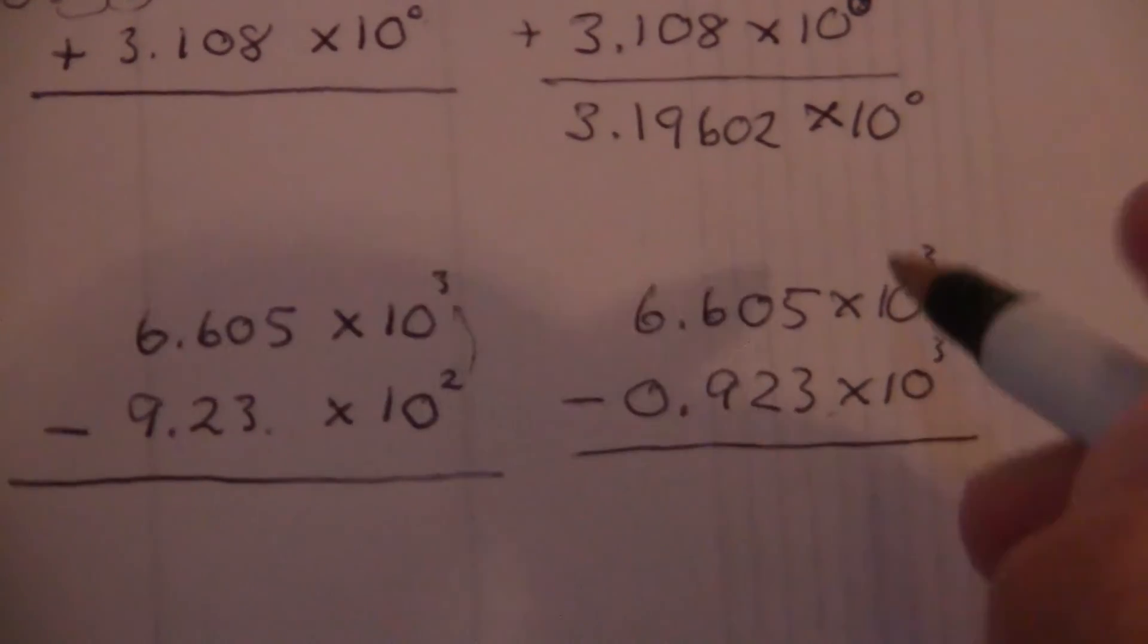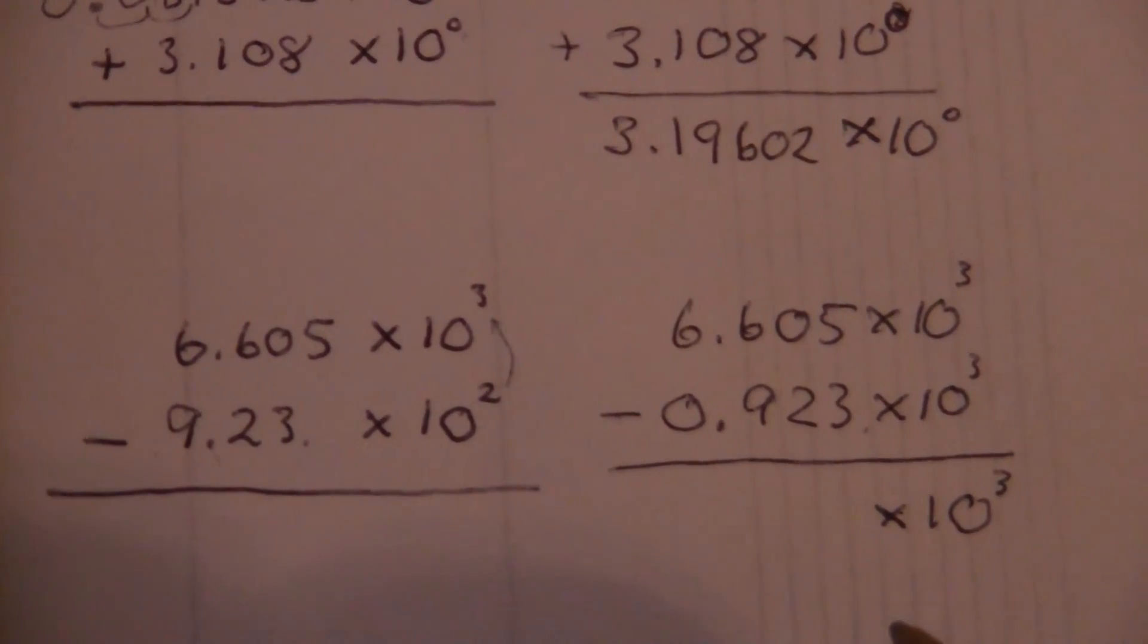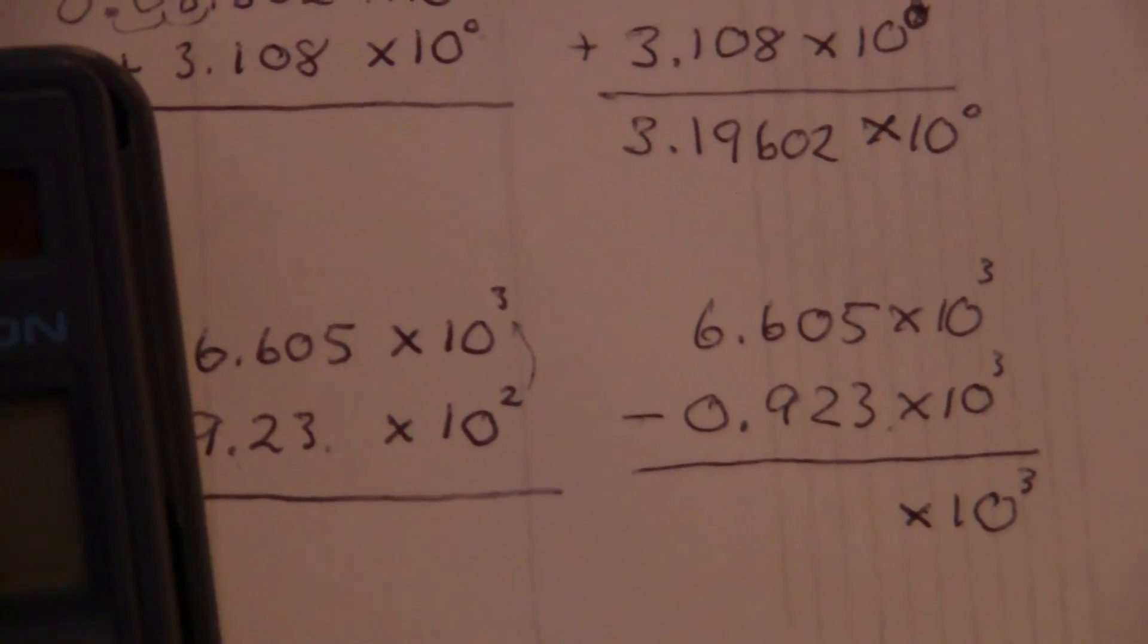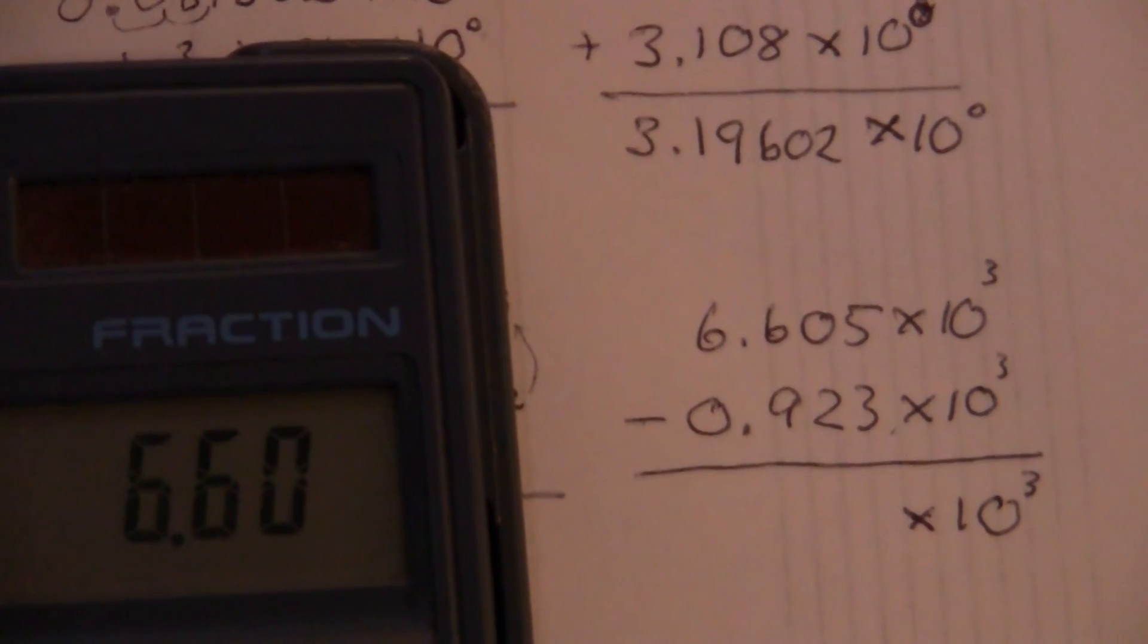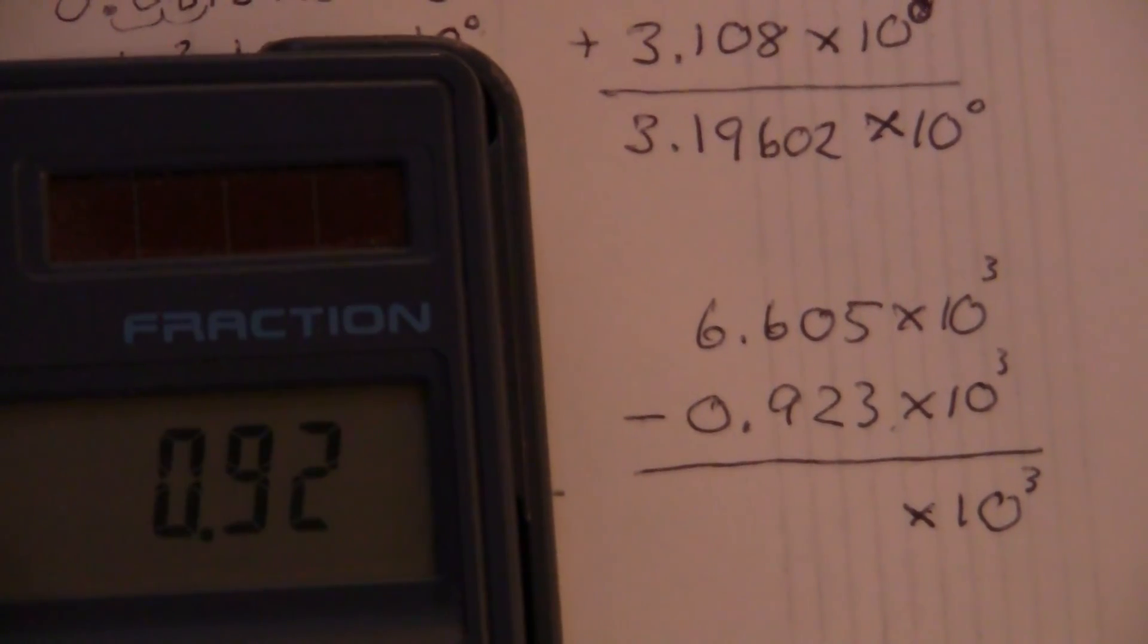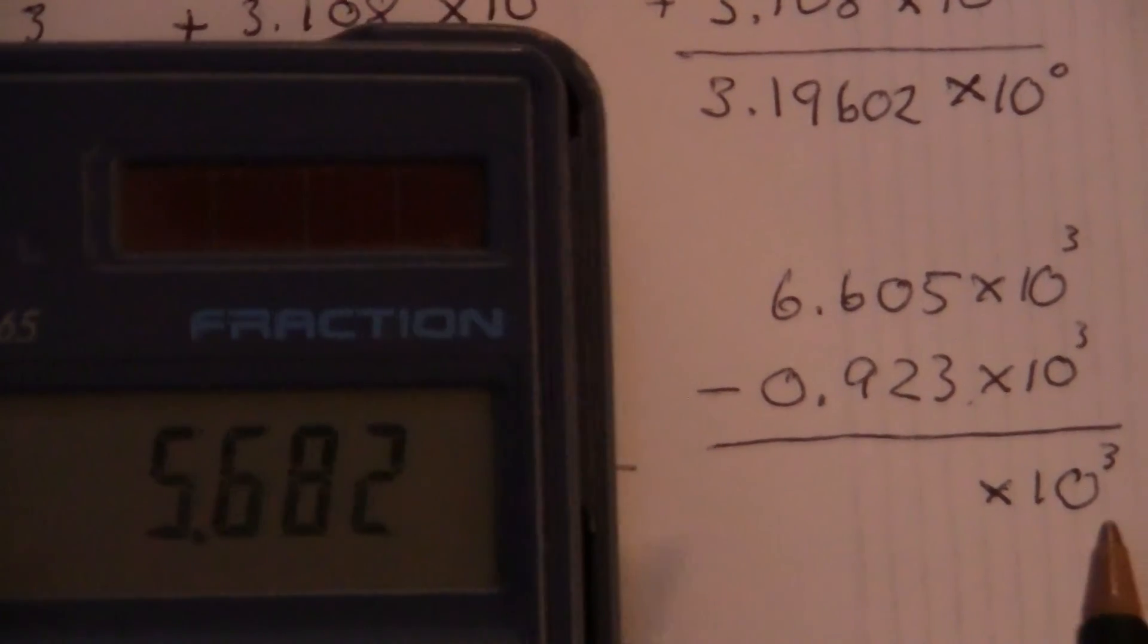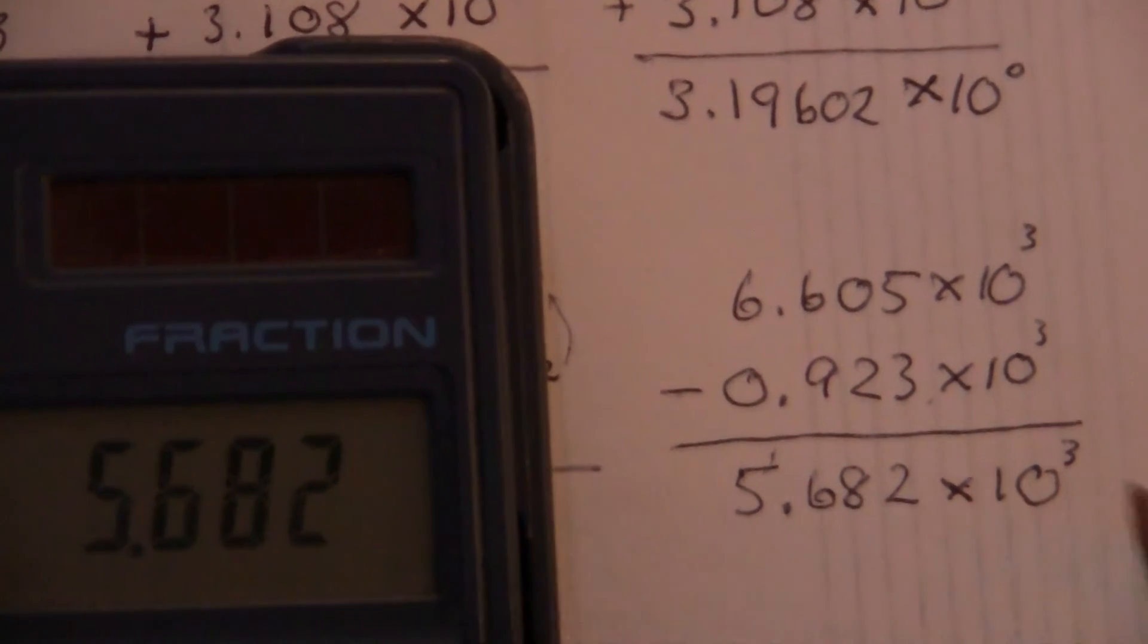And I'm going to subtract those. So you see it is just the same process as we did before, except this time we're going to subtract it. And I'm just going to go ahead and use the calculator for that to make things simpler. 6.605 minus 0.923. You'll notice the calculator also puts the zero in front. 5.682.